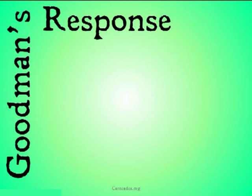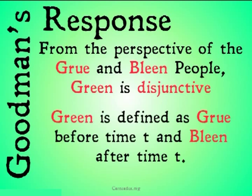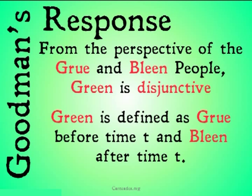Goodman's response to this was to say that from the perspective of the grue and bleen people, green is in fact disjunctive — because green could be defined as 'grue before time t and bleen after time t.' So it's just a matter of perspective. Swinburne is going to attempt to give a more solid reason that grue should be considered something different from green, something of a different kind.